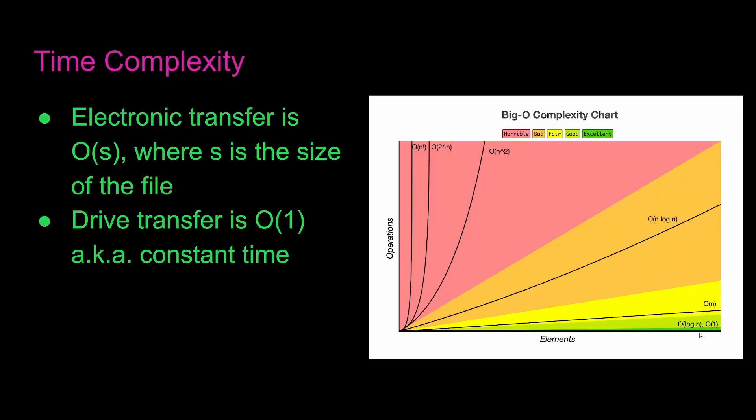And here we have a Big O complexity chart that shows a bunch of different complexities. You can see that O(log n) and O(1) are good. O(n) scales linearly with the input. O(n log n) scales a bit faster. n squared is even faster. 2 to the n and n factorial are just horrible.